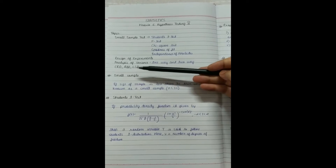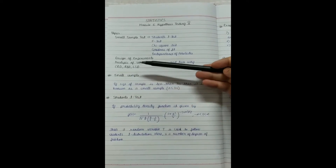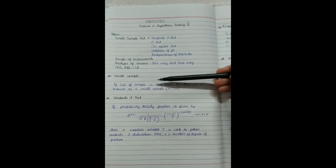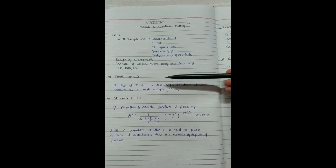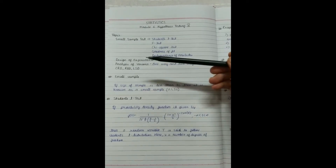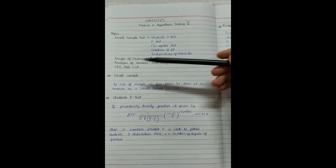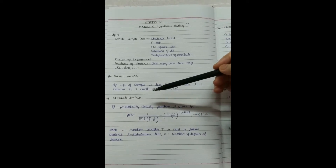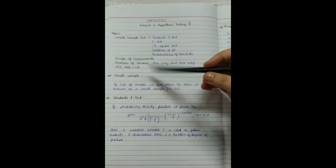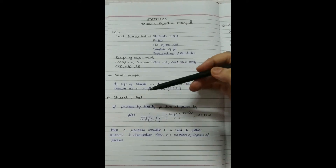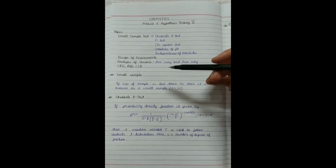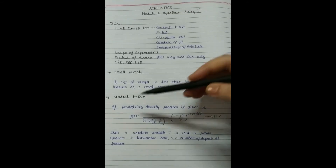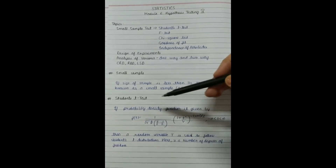First, let us understand what a small sample is. If the size of a sample is less than 30, then it is considered a small sample. So whenever the size of the sample given to us is less than 30, it is known as a small sample.